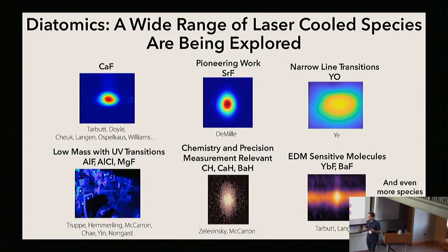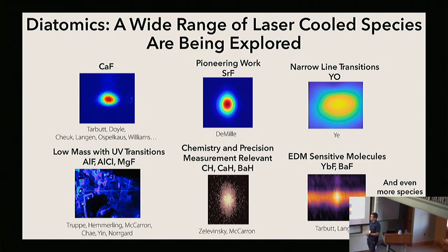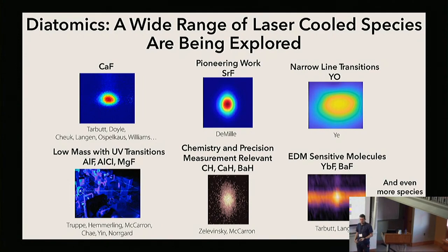As you've already heard throughout this workshop, there are many different diatomic molecules now that have been laser cooled, and each of these different species have various advantages and disadvantages. You've heard a lot about many groups working on calcium fluoride, which is what I'll talk more about today. There are also other molecules — for example, molecules with UV transitions that seem very promising for efficient deceleration and trapping, as well as EDM-sensitive molecules that are very heavy, such as YbF and BaF.